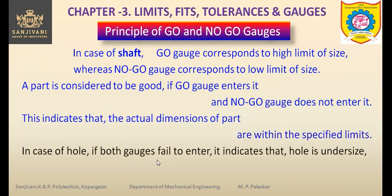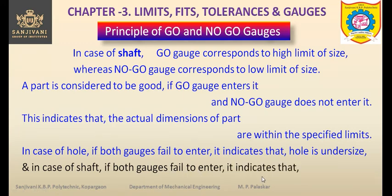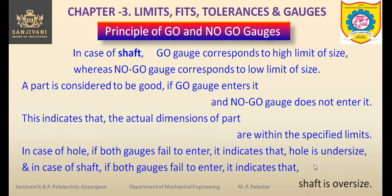In case of a hole, if both gauges fail to enter it, that indicates the hole is undersized — we are unable to insert both the go gauge and the no-go gauge. In case of a shaft, if both gauges are unable to get inserted, it indicates that the shaft is oversized. When both gauges cannot be inserted, it means there is excess material that needs to be removed.